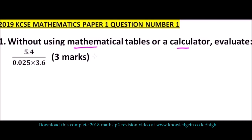So if you look at the numerator here, we have 5.4, that is 1 decimal place. The denominator has 0.025, those are 3 decimal places, and 3.6, 1 decimal place. So that adds up to 4 decimal places.